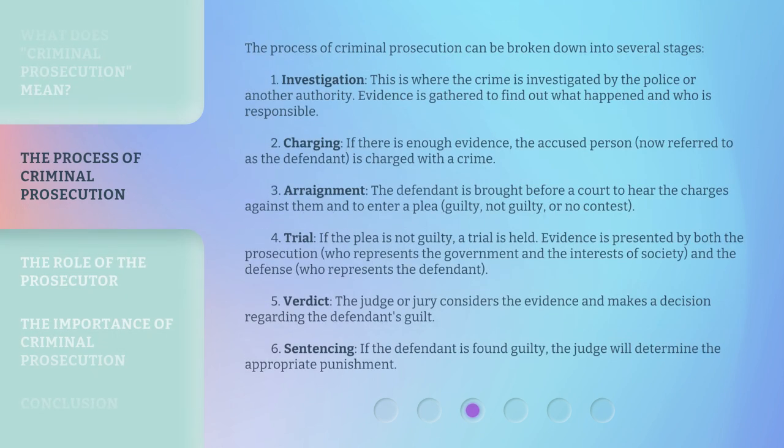The process of criminal prosecution can be broken down into several stages. Stage 1: Investigation. This is where the crime is investigated by the police or another authority. Evidence is gathered to find out what happened and who is responsible.